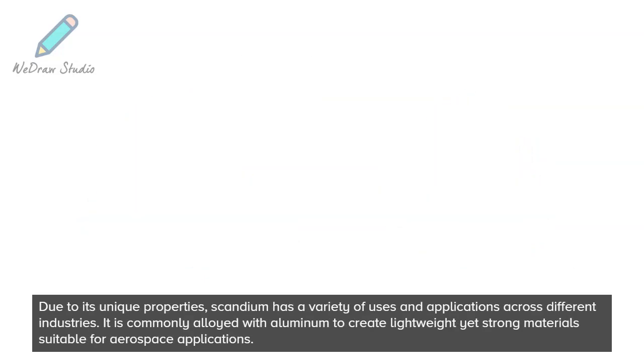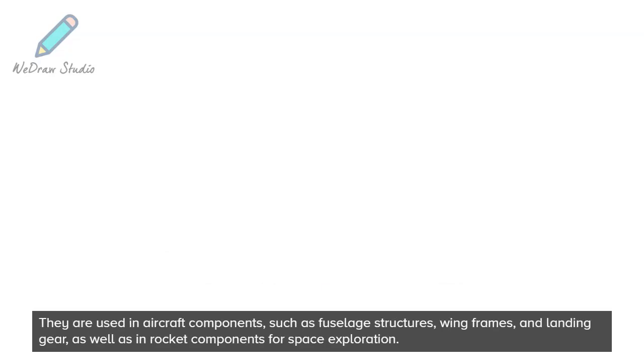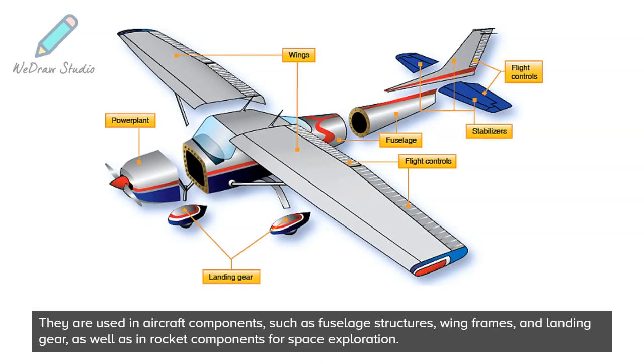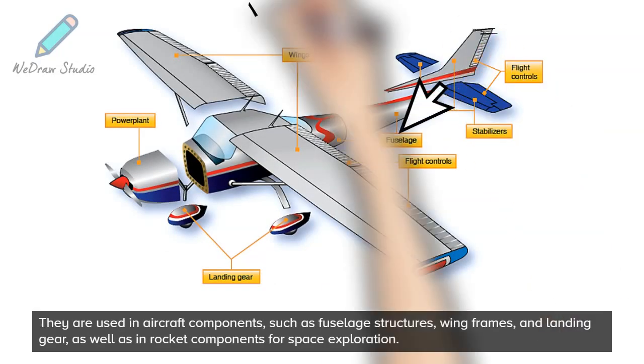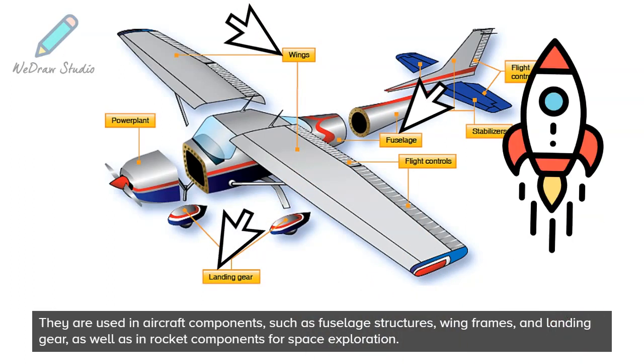Due to its unique properties, scandium has a variety of uses and applications across different industries. It is commonly alloyed with aluminum to create lightweight yet strong materials suitable for aerospace applications. They are used in aircraft components such as fuselage structures, wing frames, and landing gear, as well as in rocket components for space exploration.